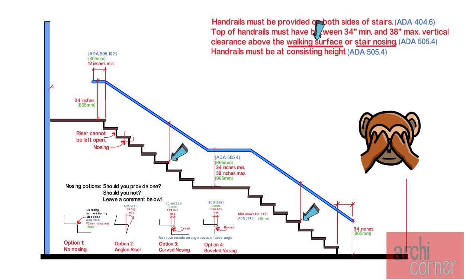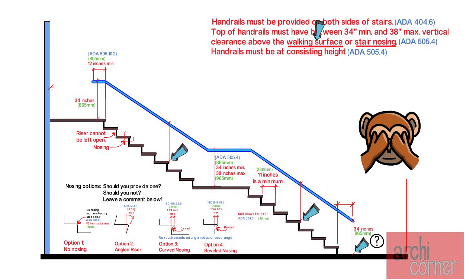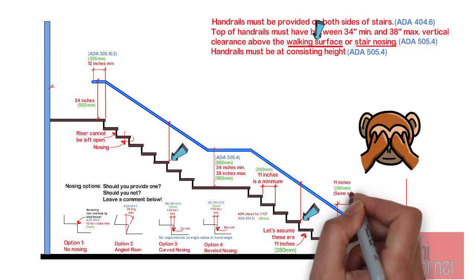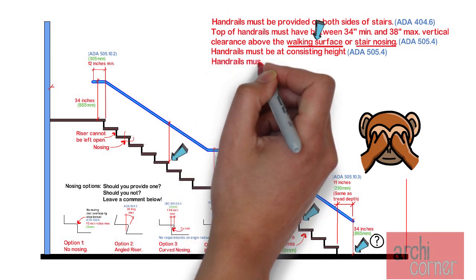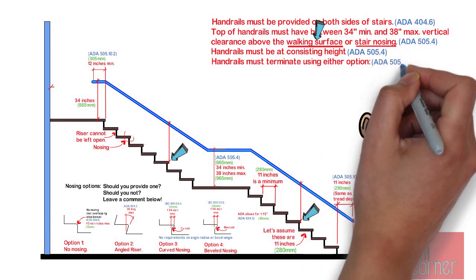Now let's talk about extensions at the bottom. This is a tricky one because there is no nosing at the bottom landing. Also, the tread size of 11 inches that we spoke about earlier is a minimum and as we already discussed, the treads must be uniform. Therefore, in this example, let's assume that the stairs drawn here have an 11 inch deep tread. Therefore, we must continue our handrail for the length of 11 inches to match the tread size beyond the last riser nosing. Once you provide this extension, you must terminate your handrail both at the top and at the bottom using either option.